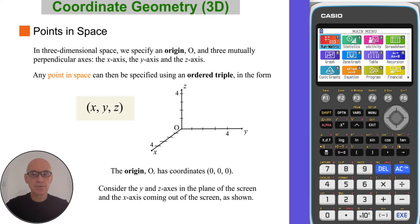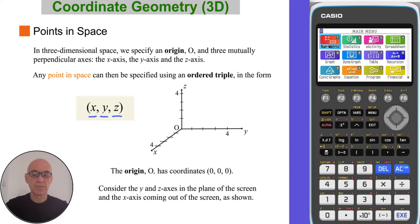In three-dimensional space, we specify an origin O, and three mutually perpendicular axes: the x-axis, the y-axis, and the z-axis. Any point in space can then be specified using an ordered triple in the form x, y, and z, as shown here.